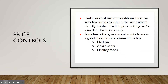Why would the government do this? In a normal market condition, the government in the United States doesn't get directly involved in price setting of that many things. We are a market-driven economy — you can't be a market-driven economy and have the government setting prices; that's socialism. But there are instances where the government does get involved, and typically they're trying to make a good cheaper for consumers — medicine, apartments to rent, healthy foods. There's a list of different things it could be, but price controls are what we're looking at.